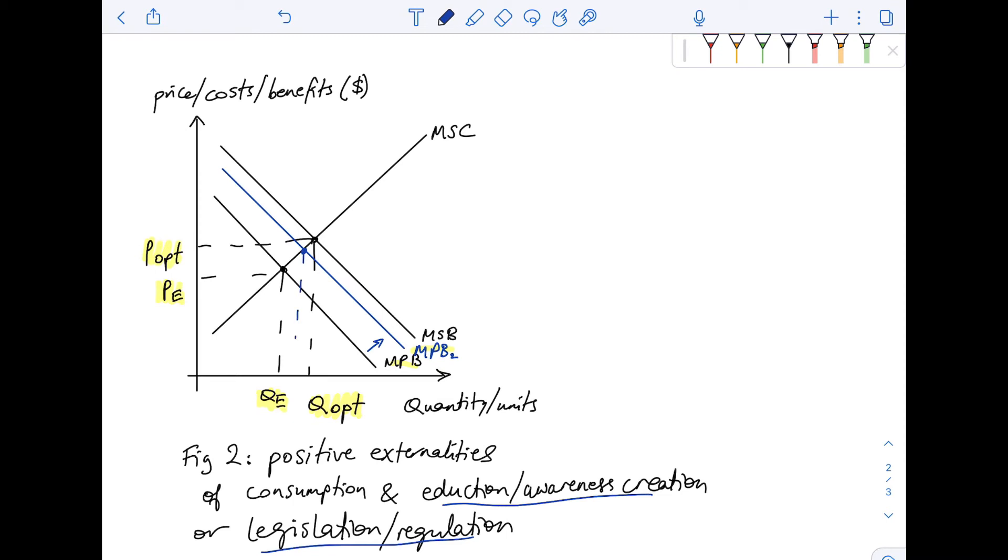This will create a quantity that's a little bit closer to QOPT from QE to Q2, and a price that's a little bit closer to POPT from PE to P2.